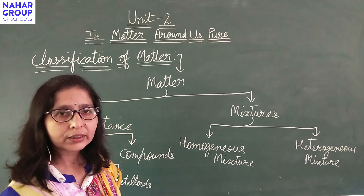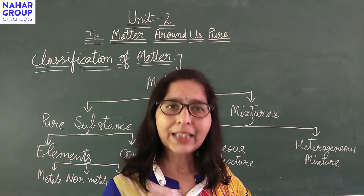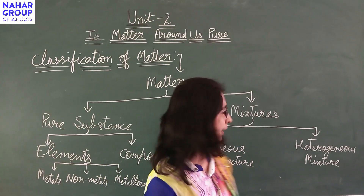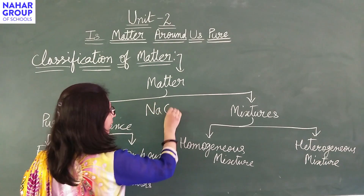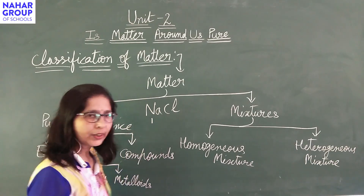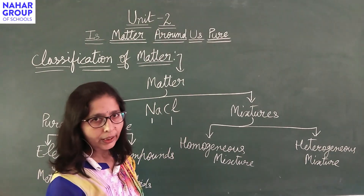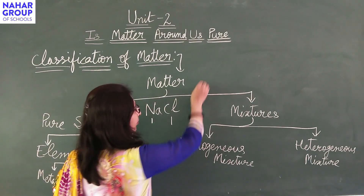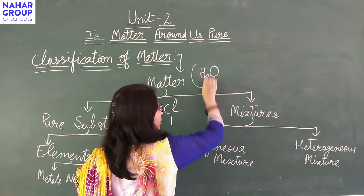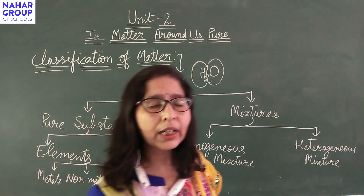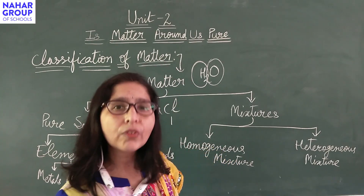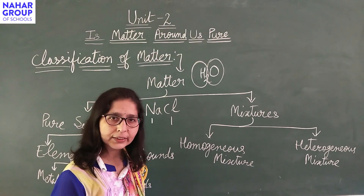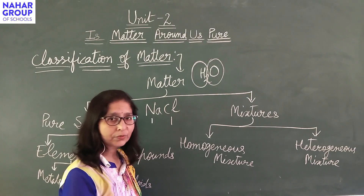Compounds: a substance in which two or more particles are present in a definite ratio is called a compound. For example, sodium chloride — in sodium chloride, one sodium atom and one chlorine atom combine to form the product. In the case of water, two hydrogen atoms and one oxygen atom combine to form water. This is a compound. The ratio of the particles is fixed and remains the same. But in the case of a mixture, the ratio is not fixed.